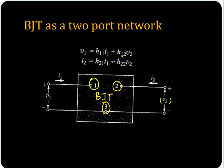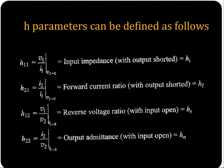H11 is equal to V1 by I1 for V2 equal to 0. You can see that it is the ratio of input voltage to input current. So it is the input impedance with the output shorted.